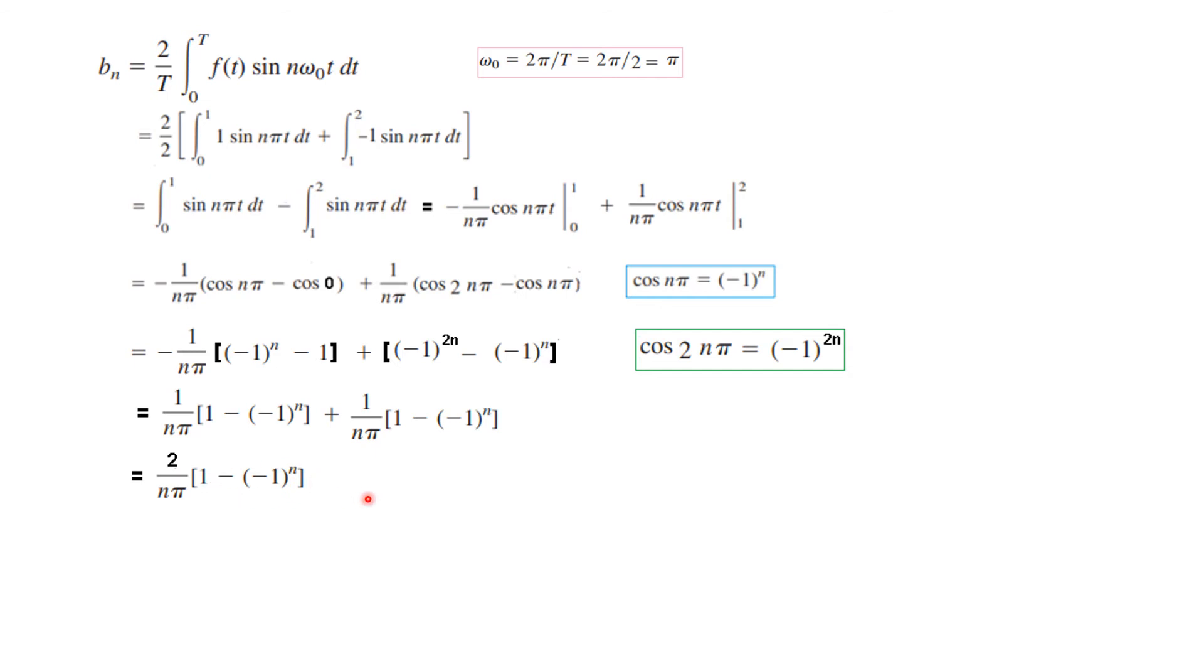Now this value will be different for the value of n. When n is equal to let's say 1 then this will be minus minus 1 is plus 1. So it will be 2. So for n is odd. This will be 4. Even if you take n is equal to 3 or 5. It will be 4.